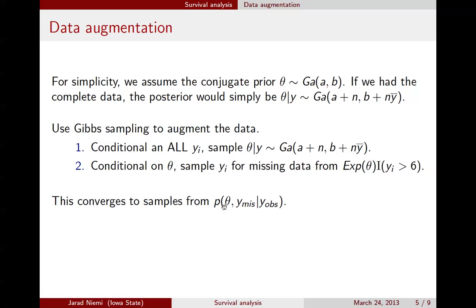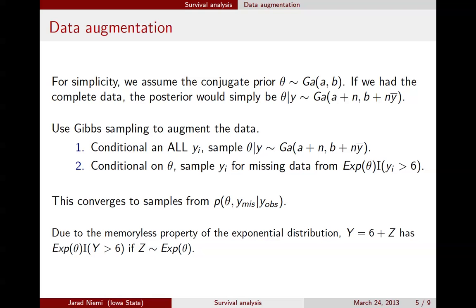The Gibbs sampler converges to the joint distribution of theta and the actual waiting times for the missing data, conditional on the observed data and the cut time of 6 weeks. What we're ultimately interested in is the marginal distribution for theta. Sampling from the truncated exponential is trivial due to the memoryless property: simply sample from an untruncated exponential with parameter theta and add 6 to it.